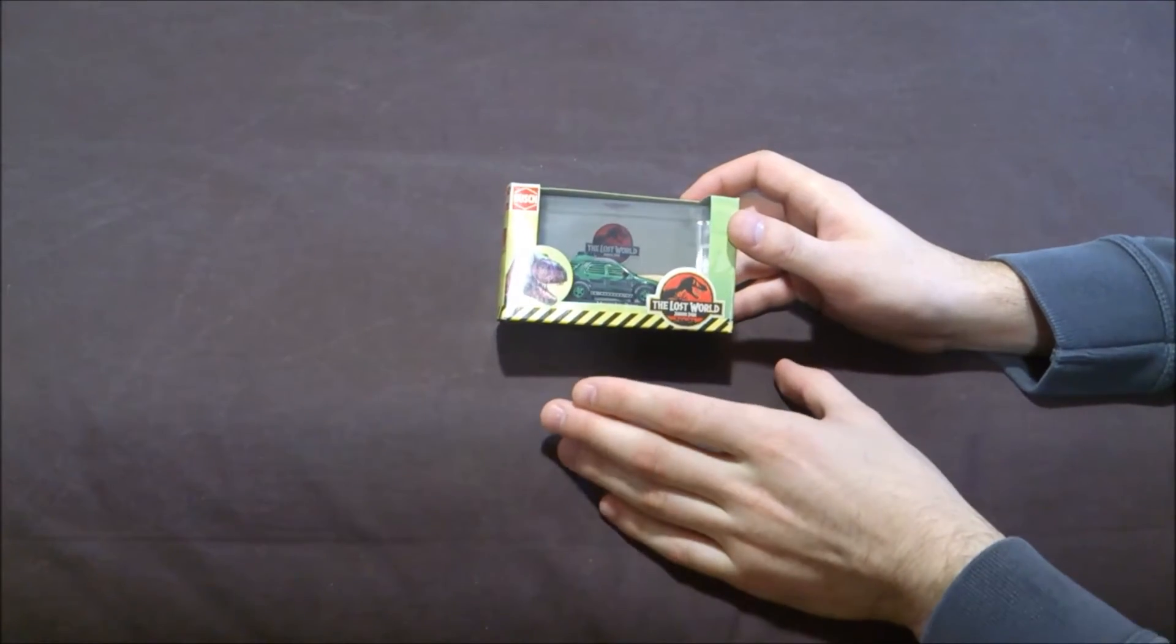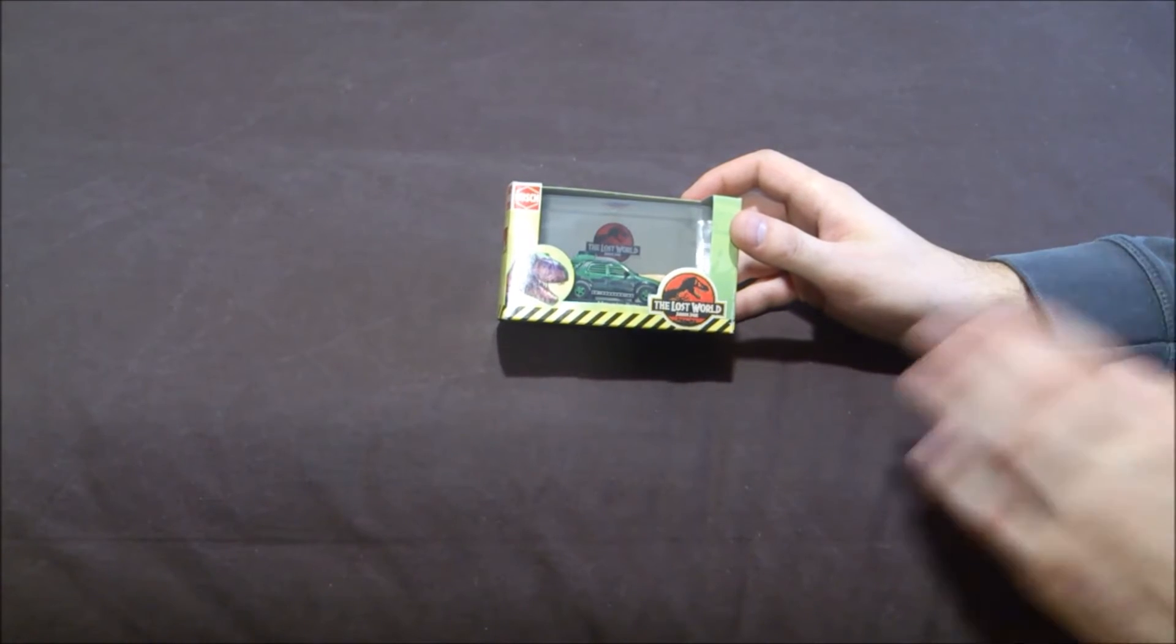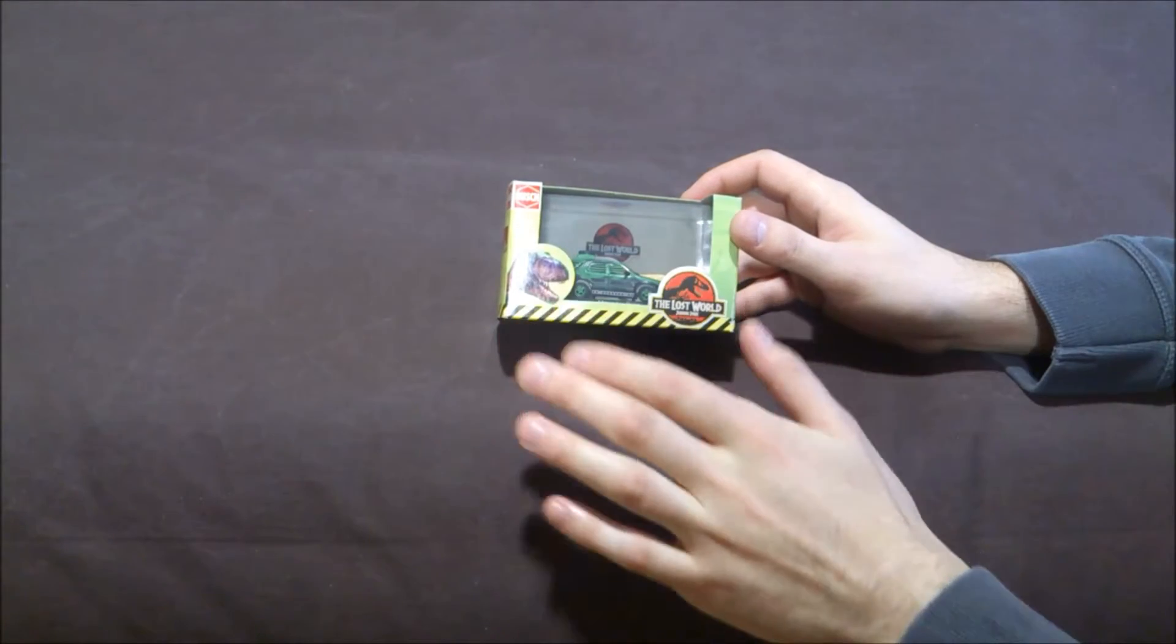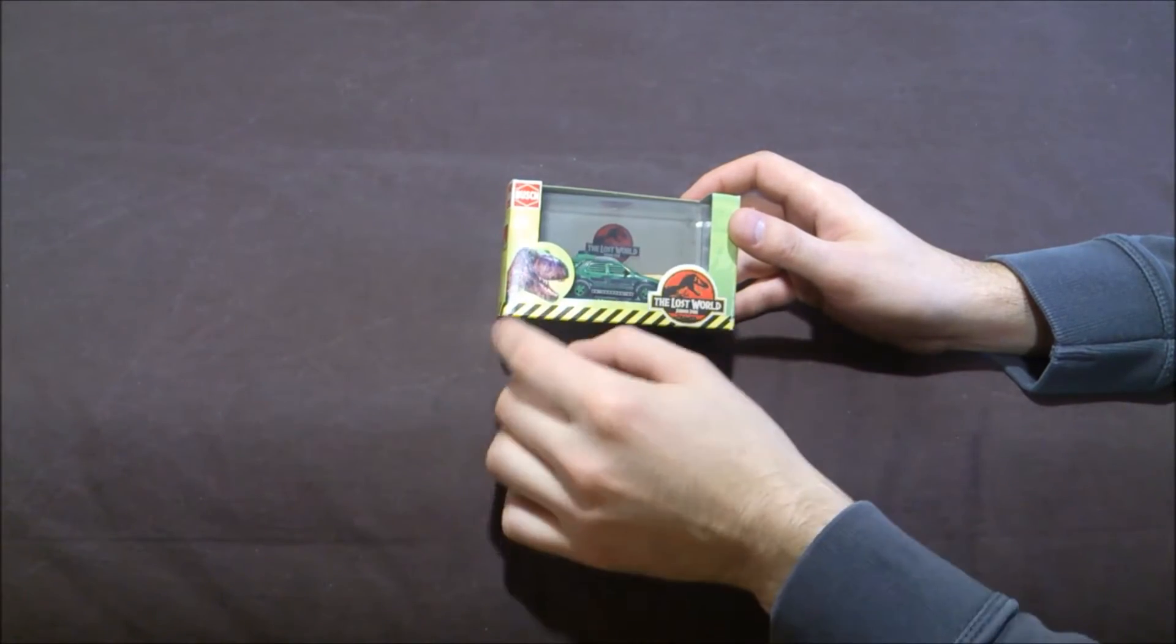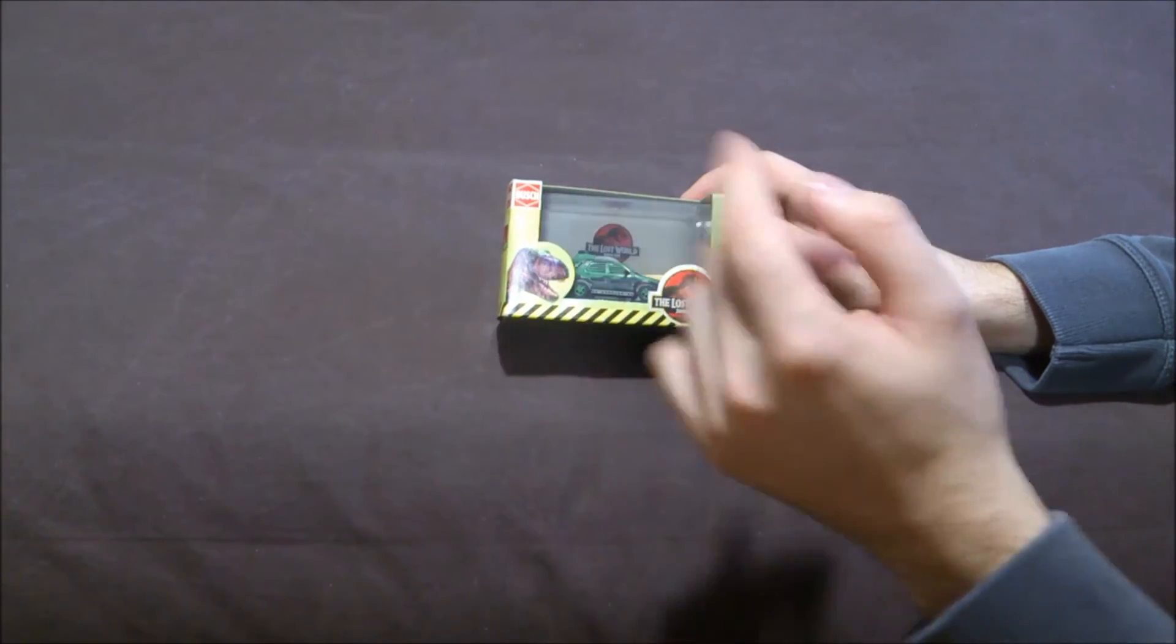You can see the box is really tiny and it has the typical design of the Lost World toys: green box, yellow and black stripes, T-Rex and red logo.